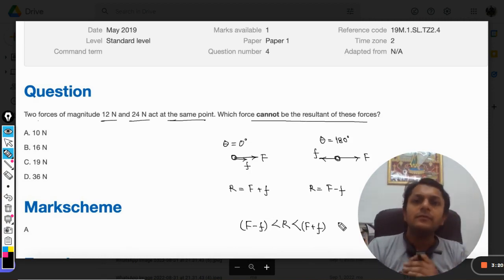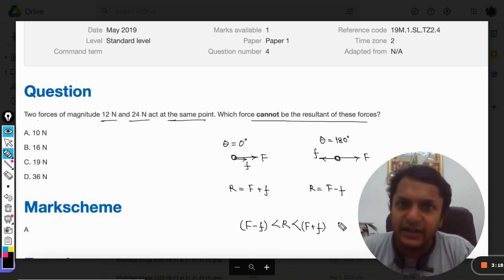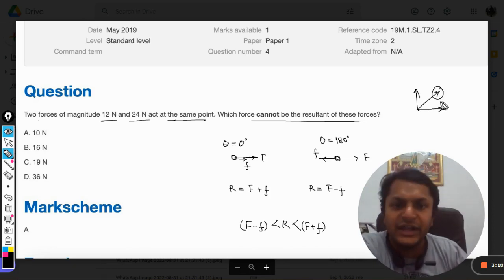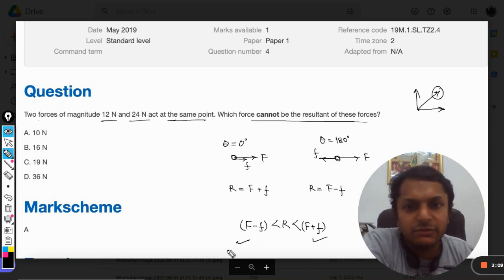Whatever is the resultant, like for example if the forces are at 90 degrees, the resultant will lie in a range. This will be maximum, this will be minimum. So if it is 12 and 24, I can say that 36 will be the maximum value and 24 minus 12, that is 12 newton, will be minimum.